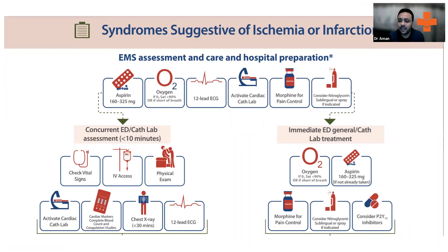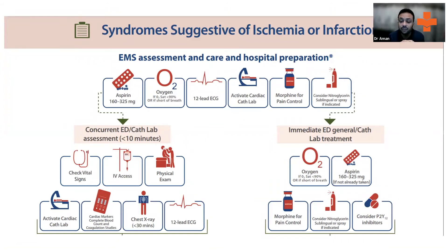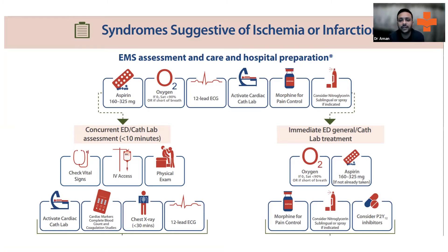If you're in a peripheral setup, say 20 kilometers from the city, and you've done the ECG confirming an MI, transportation of the patient is equally important. Unfortunately, the transport system is not always reliable. Whenever transporting, make sure to get an IV line in place, because these patients are highly susceptible to ventricular arrhythmias, and if there's no IV access when they crash, the prognosis becomes quite bad.